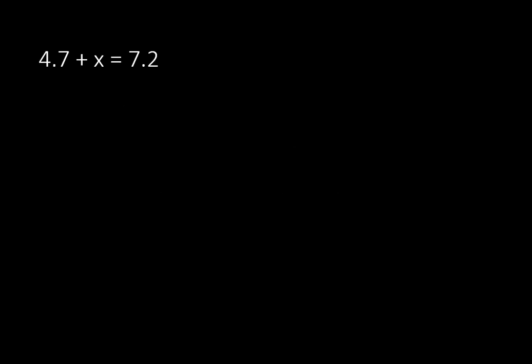Our first equation is going to look like this: 4.7 plus x equals 7.2. With all equations, we're trying to find what is our value for our variable, and to do that we need to follow these same three steps.